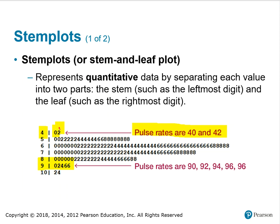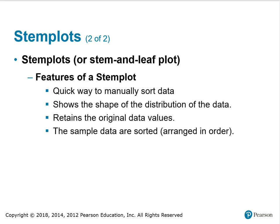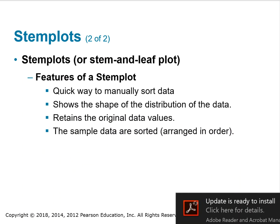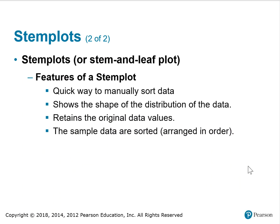If you think about how this distribution would look if you were to turn it on its side and draw a curve — maybe not normal — you get a picture of it laying on its side. It almost has a bell-shaped distribution, so this data seems to be normal. The features of a stem plot: it's a quick way to manually sort data, shows the shape of the distribution, you retain the original data values, and the sample data are sorted in order.